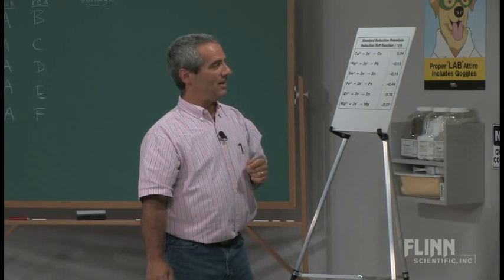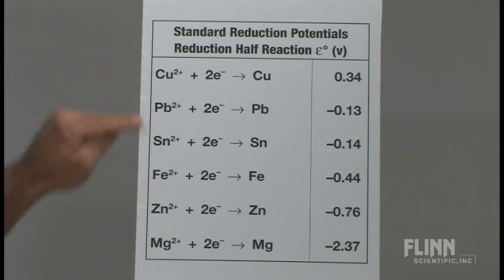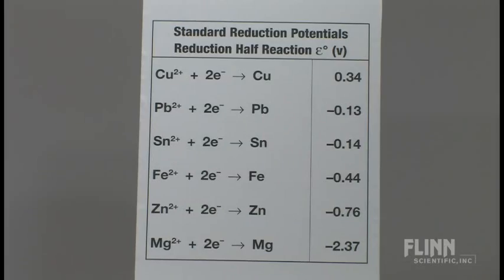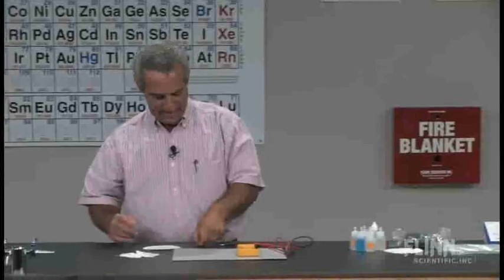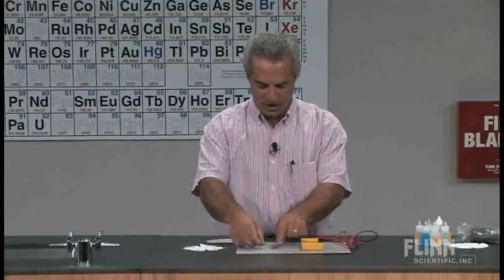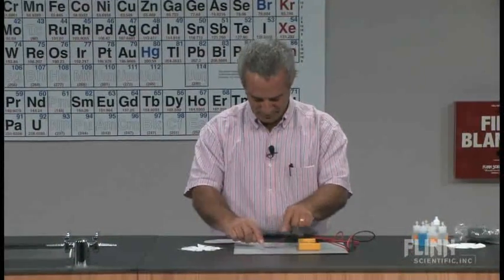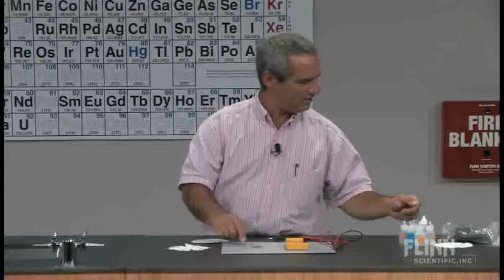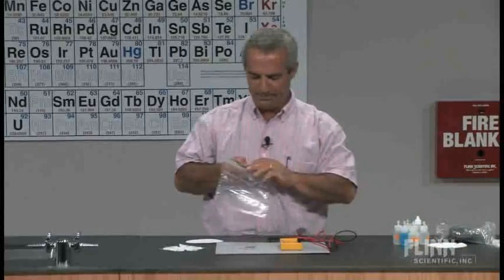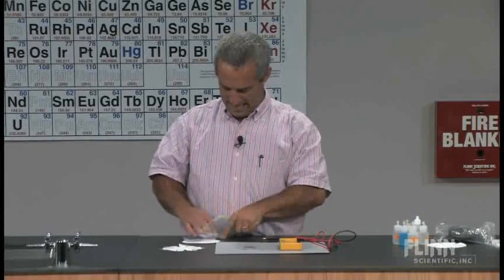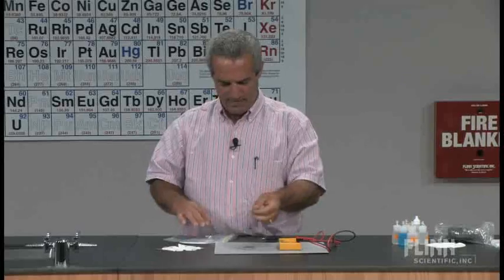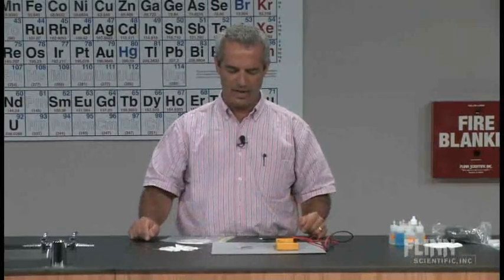We've got a little activity here where I've got these exact same six metals as unknowns, labeled A, B, C, D, and E. My students start by making a prediction. They look at them, feel them, pick them up, try flexibility, and make predictions as to which ones they are.